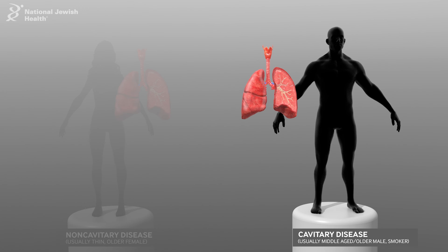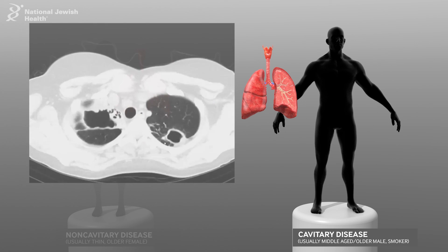Radiographic abnormalities in patients with predominantly fibrocavitary NTM lung disease are characterized by cavities with areas of increased opacity, usually located in the upper lobes with frequent pleural thickening, volume loss by fibrosis, and traction bronchiectasis.